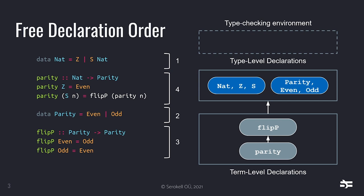The first thing dependency analysis does is split type-level declarations from term-level declarations, because currently types can never depend on terms — we cannot use term-level functions on types. If we implement dependent types in the future, this will have to change, but that's a story for another day. After splitting terms and types, it performs analysis on the declarations and orders them by dependency.